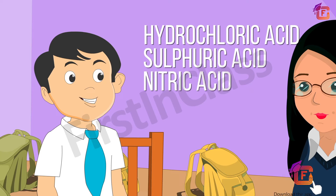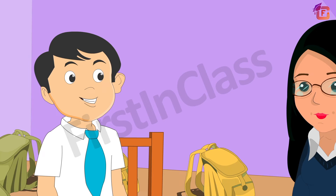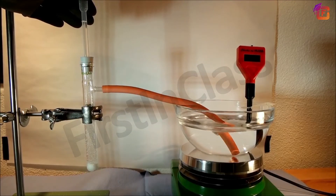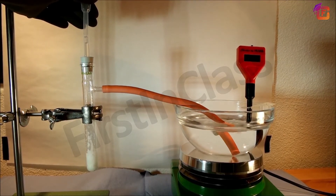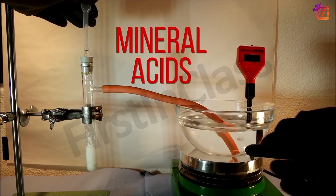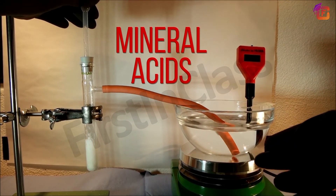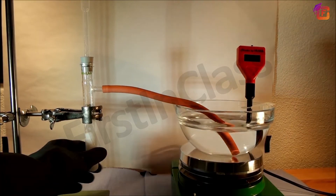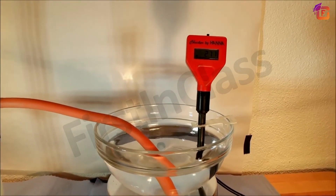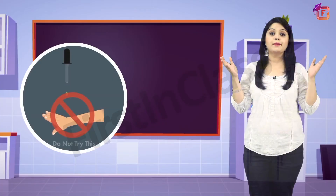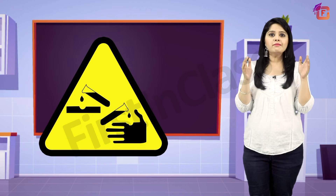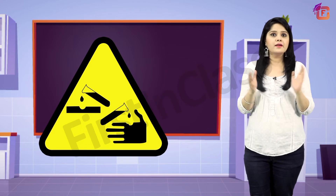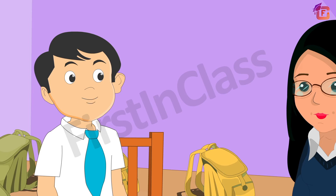Where do we get these acids, and what kinds of acids are these? Apart from organic acids that we get from naturally occurring substances, there is one more type of acids called mineral acids. Mineral acids are prepared from the minerals present on earth — these are man-made acids. These are so strong they can burn your hands and clothes if they fall on your bare skin, so mineral acids should be handled with care. Teacher, are all mineral acids strong?